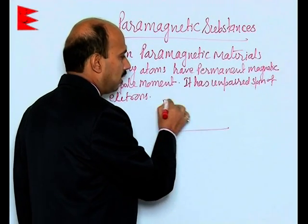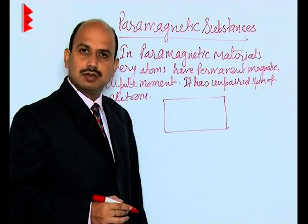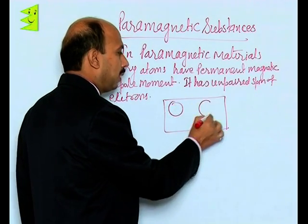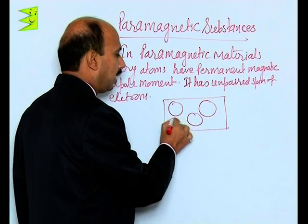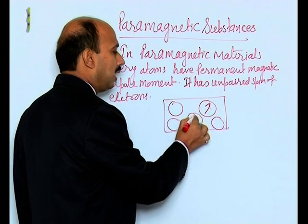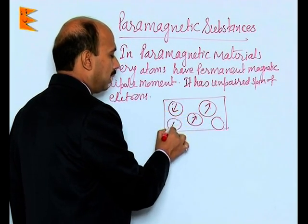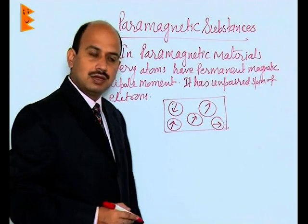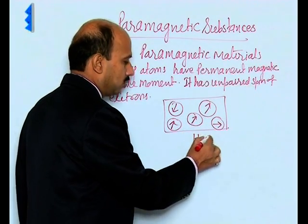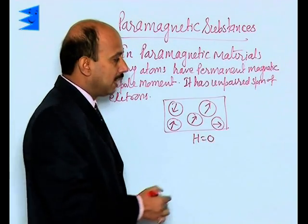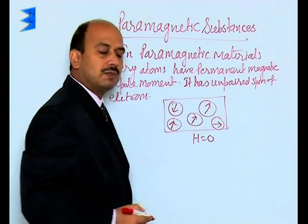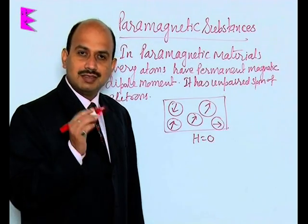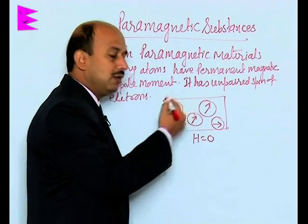In a paramagnetic material, every atom has a magnetic dipole moment, but in the absence of an external magnetic field — when H is equal to 0 — the net magnetic dipole moment of the paramagnetic substance is 0. The reason is that these dipole moments are randomly oriented.